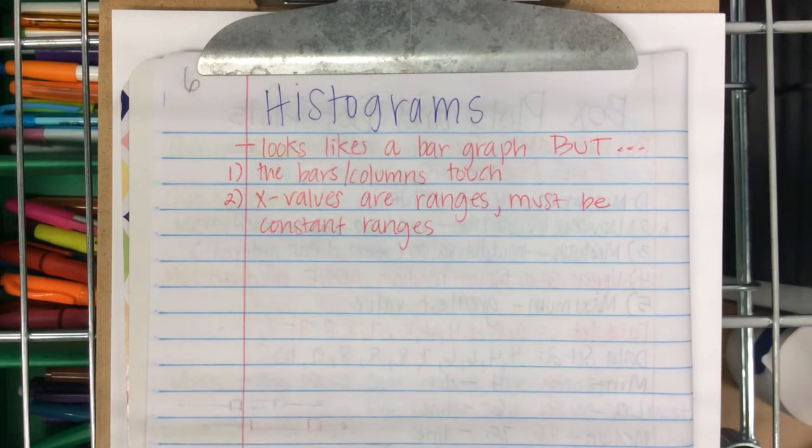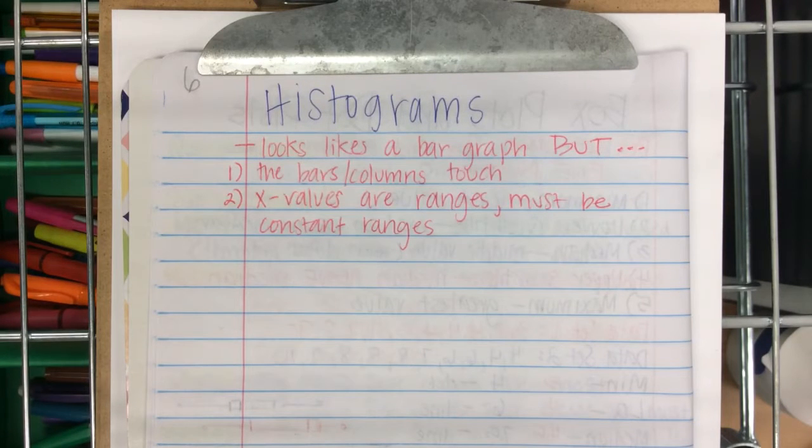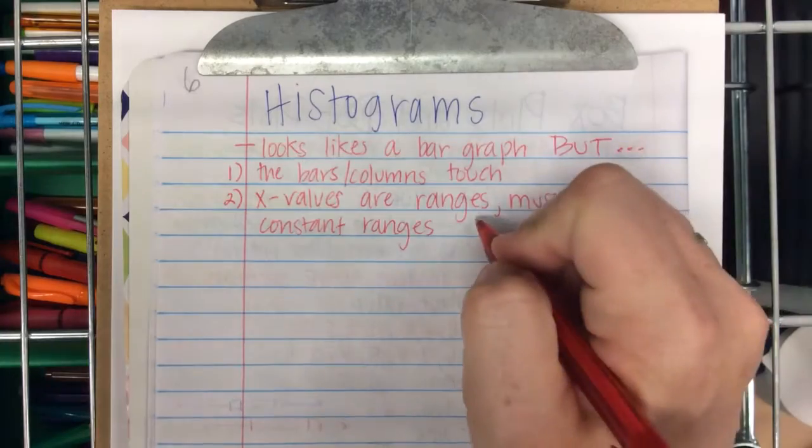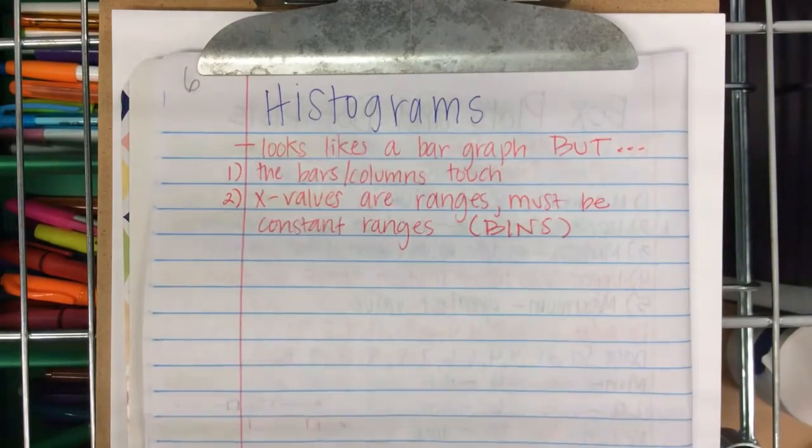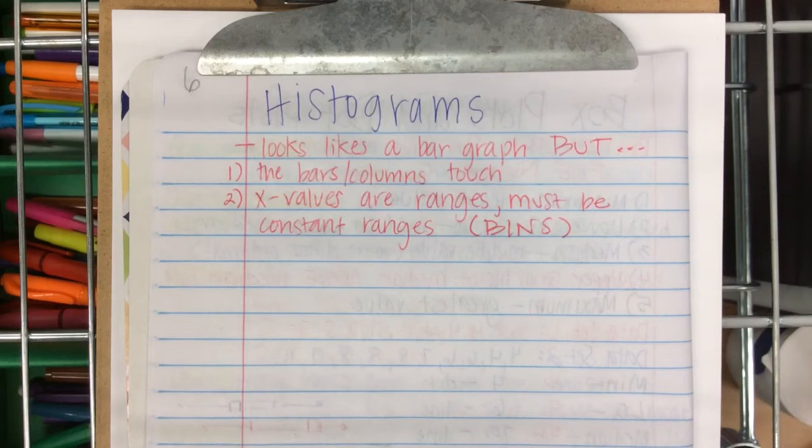they must be constant ranges. So, you couldn't say my first bar in my histogram is 10 to 12, and my next one's just 13. They have to represent the same range. These are sometimes called bins in statistics.